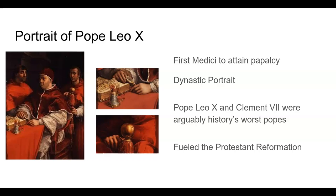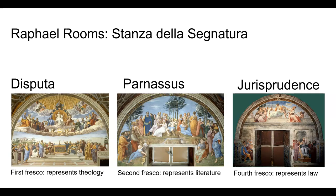These popes, these men, were terrible, and they really fueled the Protestant Reformation. Pope Julius II also commissioned a series of frescoes in the Palace of the Vatican, which have come to be known as the Raphael Rooms.